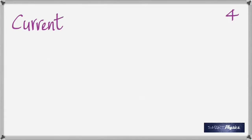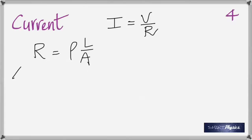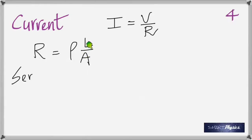Topic four is current. Ohm's law: current equals voltage divided by resistance. The resistance of a conductor depends on four factors: the material (its resistivity), the length — resistance increases with length — and the cross-sectional area (usually πr²), with resistance decreasing as area increases.